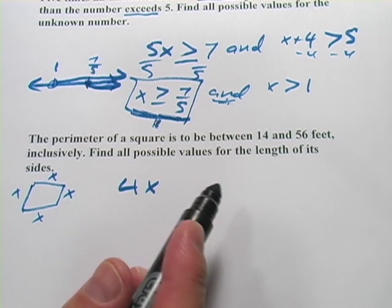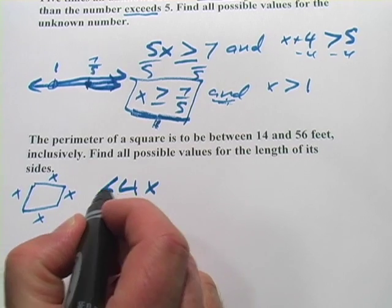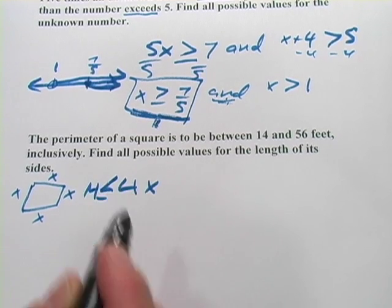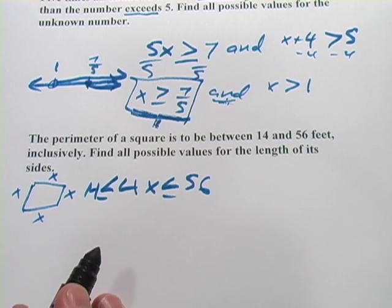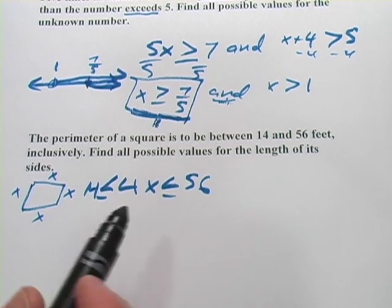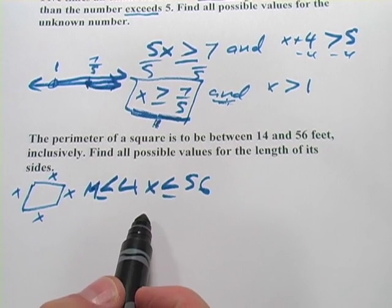Now, it's to be between 14 and 56 inclusively. So it's got to be greater than or equal to 14. And it's got to be less than or equal to 56. So that's our big inequality.